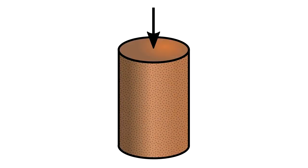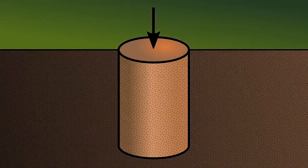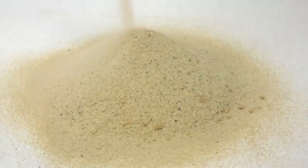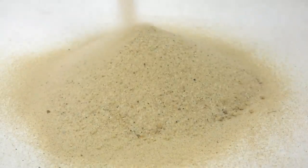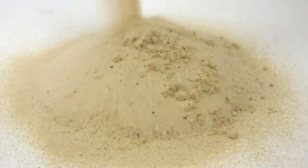Let's look back at our sample of soil. If we put the sample back into the ground, now it's surrounded by additional soil that can apply horizontal pressure. This is called confining pressure, and it helps balance out vertical forces like the weight of the soil itself. This confining pressure is the reason that a granular material can be stable at a slope, but usually won't be stable vertically.